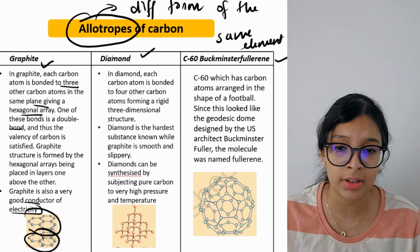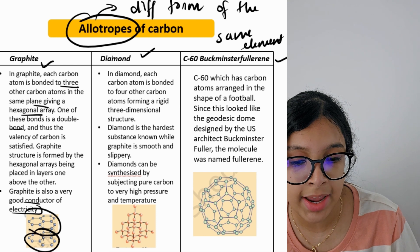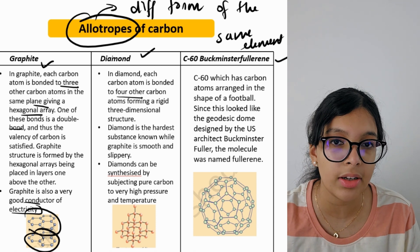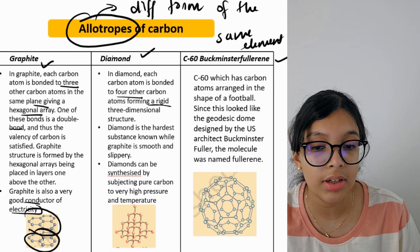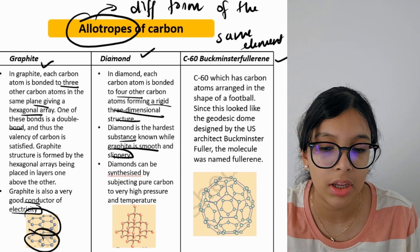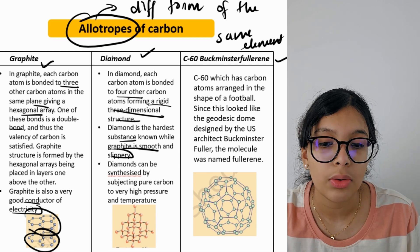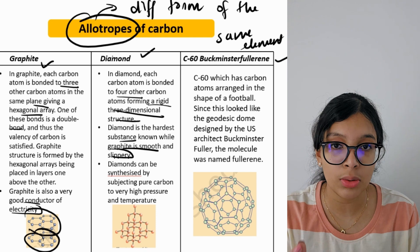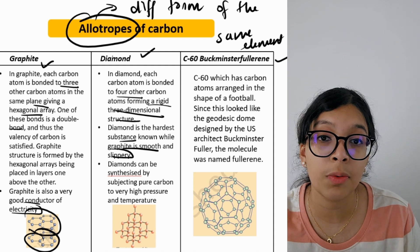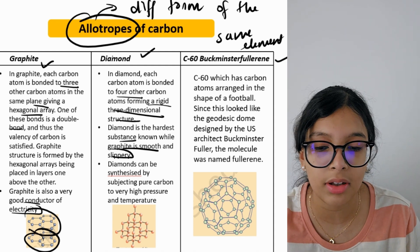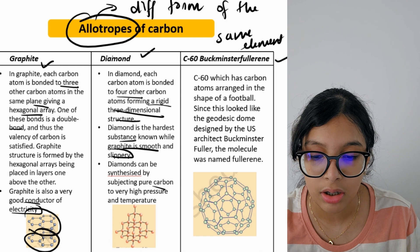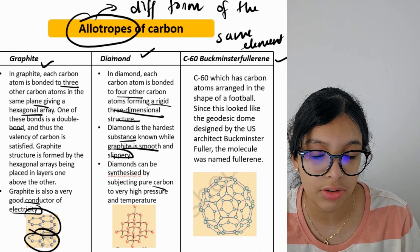In diamond, each carbon atom is bonded to four other carbon atoms, forming a rigid three-dimensional structure. Diamond is the hardest substance known, while graphite is smooth and slippery — like the graphite in a pencil. Diamond is used for cutting hard rock and similar materials. Diamonds can be synthesized by subjecting pure carbon to very high temperature and pressure.